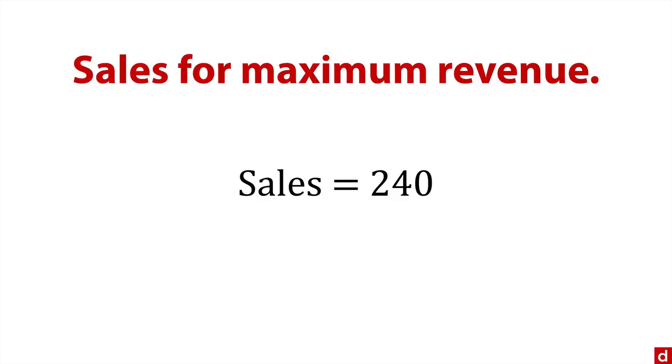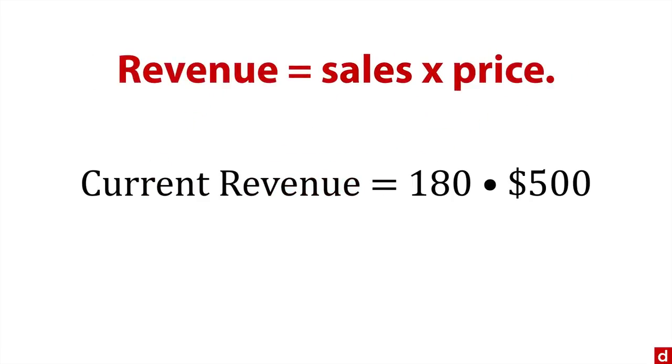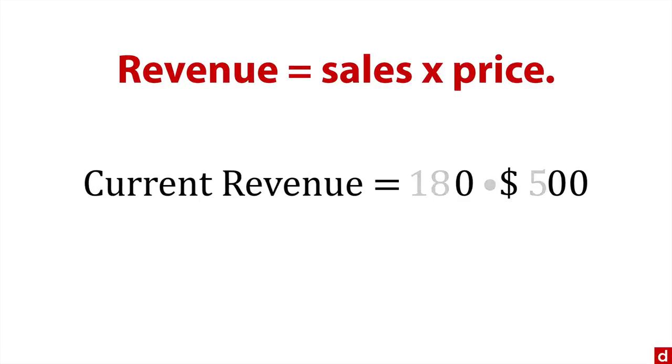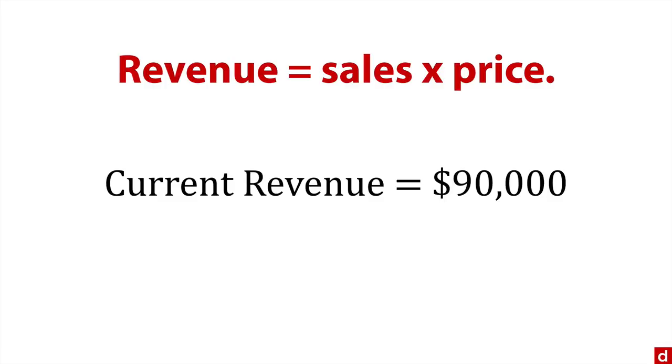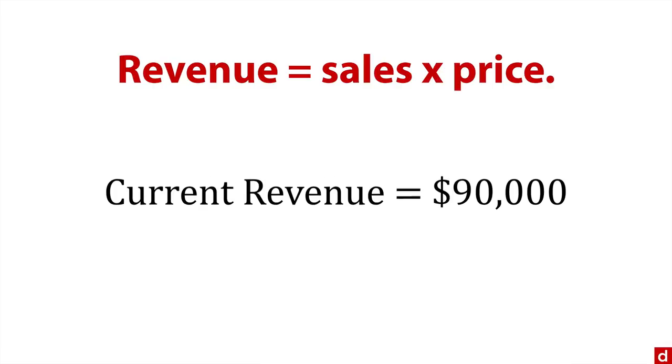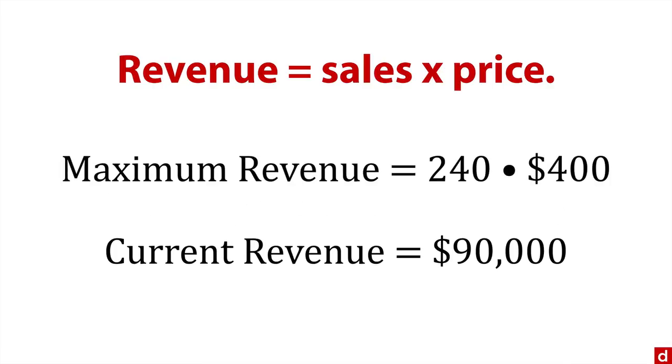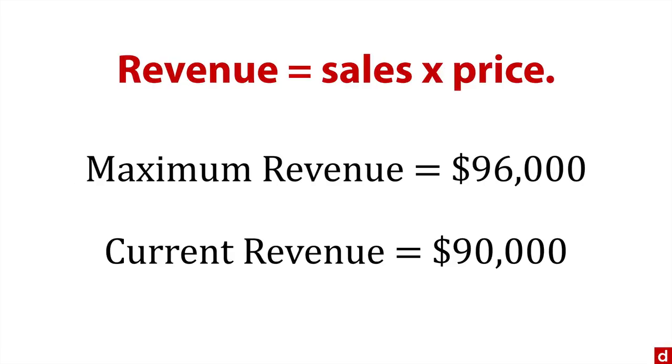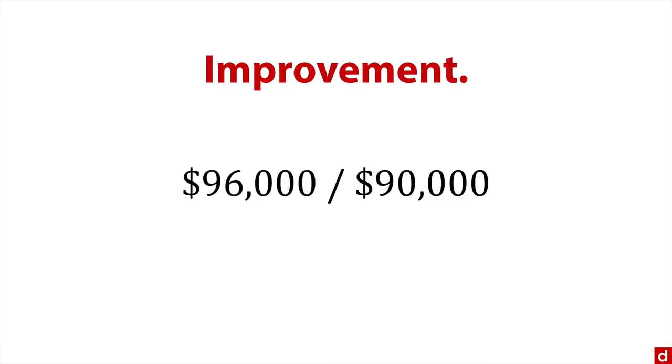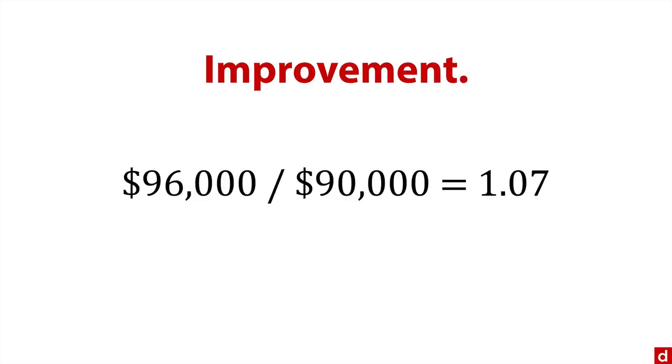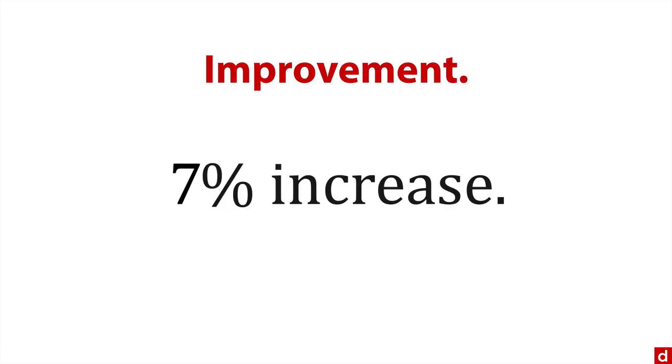Let's compare this. The current revenue is 180 new subscriptions per week at $500 per year, which means current revenue is $90,000 per year. But we can do better. The formula for maximum revenue is 240 times 400, which equals $96,000. The improvements, the ratio of those two, 96,000 divided by 90,000 equals 1.07. That means a 7% increase, and anybody would be thrilled to get a 7% increase simply by changing the price.